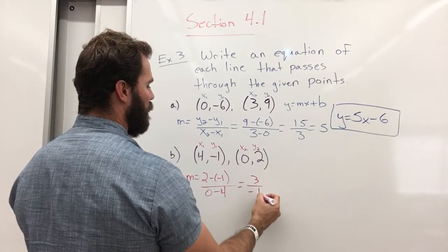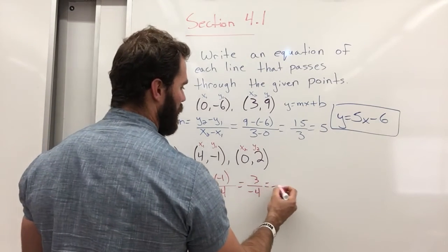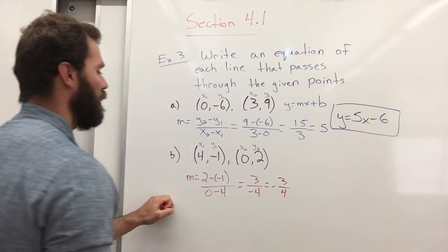3 over a negative 4. And that's all, so you could just say that's negative 3 fourths. There's my slope.